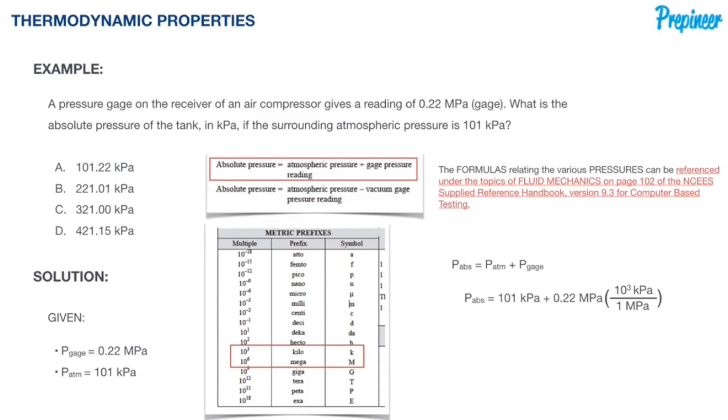Converting and solving, we get 101 kPa plus 0.22 MPa converted to kPa. The answer is C: 321 kPa.